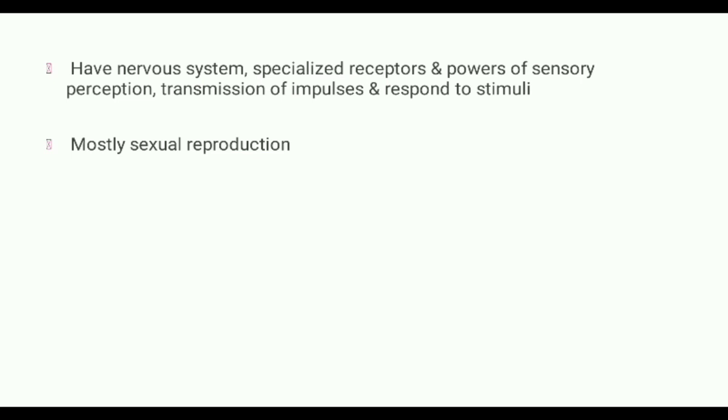Kingdom animals have a nervous system with specialized receptors that interact with the external environment, providing sensory perceptive power. There is transmission of impulses and the ability to respond to stimuli.